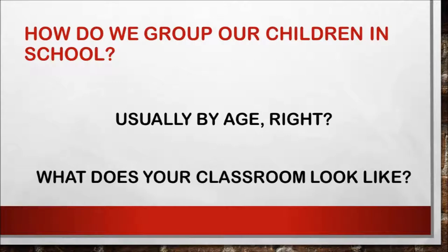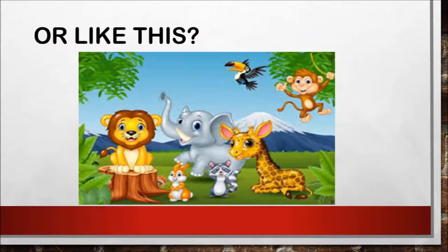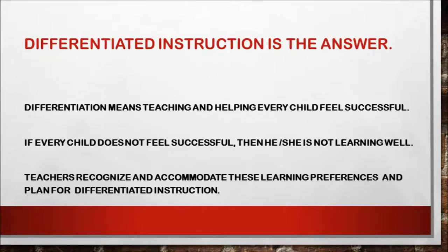How do we group our children in school? Usually by age. What does your classroom look like — does it look like this, or like this, where students are of different abilities and capabilities? If our classrooms are so diverse, how do we help students of different intelligences? Differentiated instruction is the answer. Differentiation means teaching and helping every child feel successful. If every child does not feel successful, then he or she is not learning well. Teachers need to recognize and accommodate these learning preferences and plan for differentiated instruction.